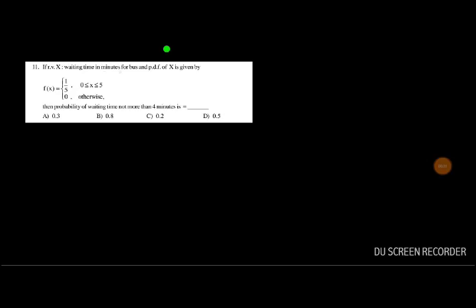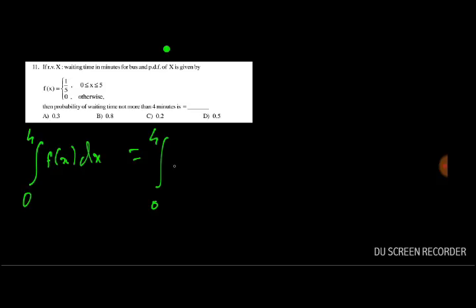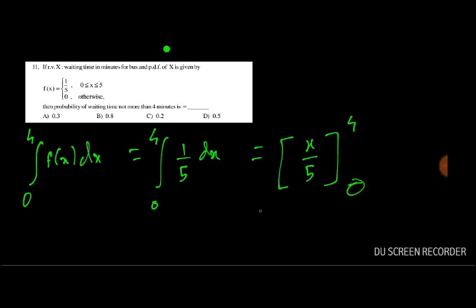Question 11: Random variable X is the waiting time for a bus with PDF f(x) = 1/5 for 0 ≤ x ≤ 5, else 0. Probability of waiting time not more than 4 minutes = ∫₀⁴ (1/5) dx = [x/5]₀⁴ = 4/5 - 0 = 0.8. The answer is B.